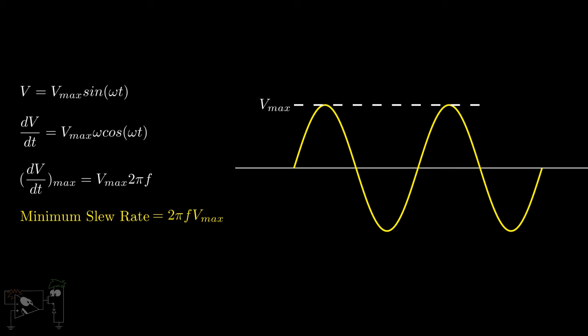Alternatively, the maximum value of frequency we can give as input to this circuit without distortions is slew rate divided by 2π times Vmax. If we violate the slew rate condition, we will get an oscillating ramp output instead of a sinusoidal output.